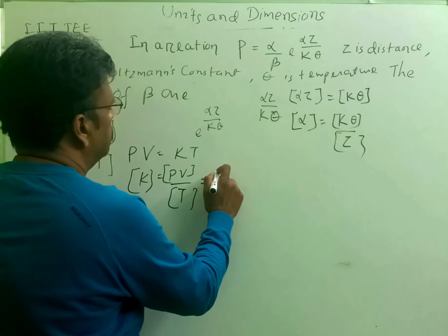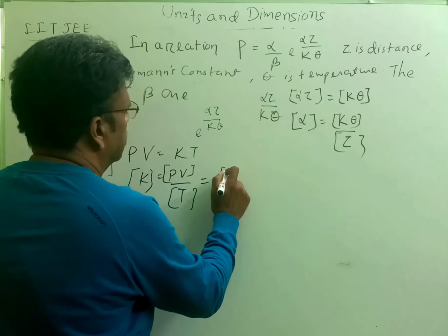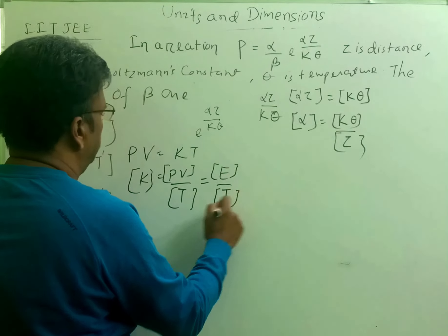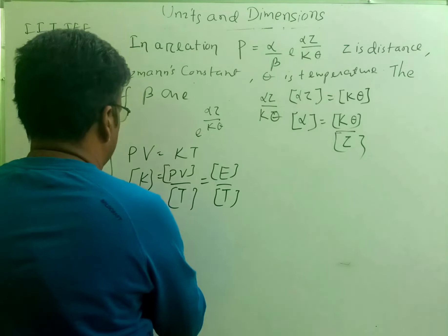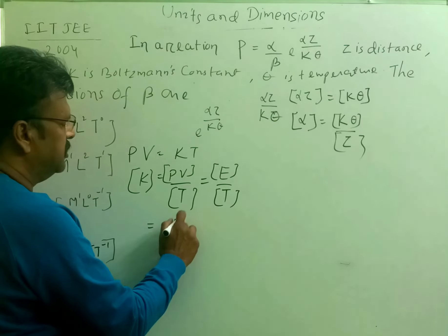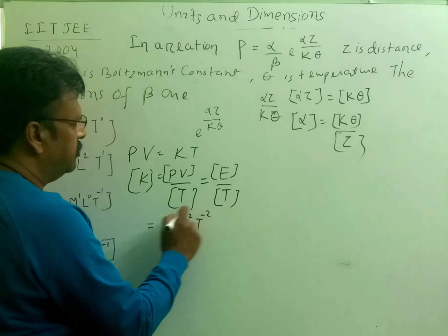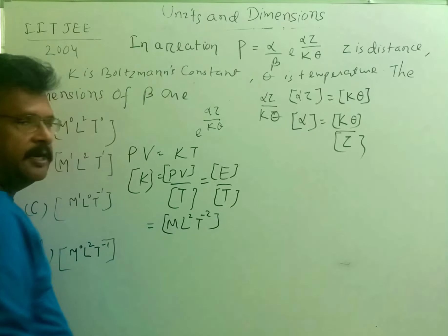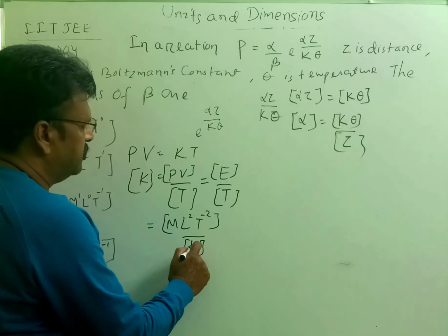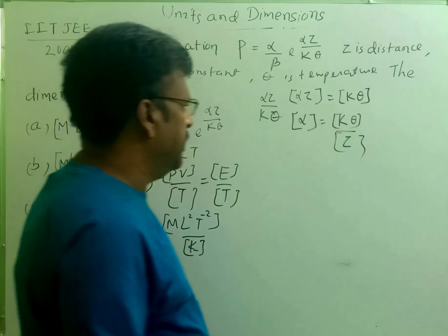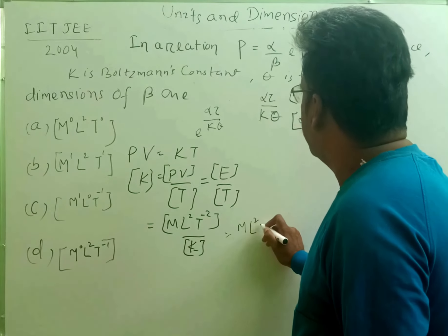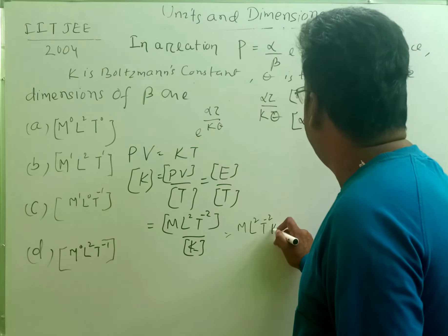What is PV? Pressure into volume is energy, so PV has dimensions of energy E. The dimensional formula for energy is ML²T⁻². Temperature T has dimension K (kelvin). Therefore, the dimensional formula for Boltzmann's constant k is ML²T⁻²K⁻¹.